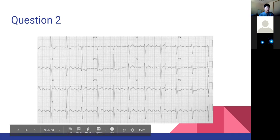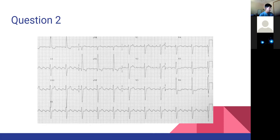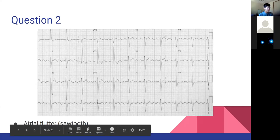Question two ECG: does anyone know what these sawtooth patterns are? The answer is atrial flutter. This is a good pattern to know - if you ever see these jagged sawtooth-like patterns, that is indicative of atrial flutter.